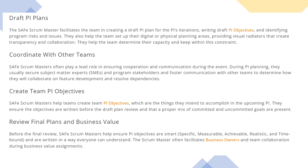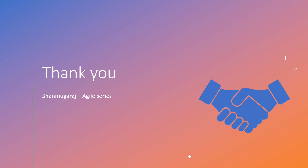Finally, they review the plans and business value. Before the final review, the SAFe Scrum Master helps ensure PI objectives are SMART and written in a way everyone can understand. The Scrum Master often facilitates business owners and team collaboration during the business value assignments. With that, we have come to the conclusion of today's video. Hope you got a nice idea on how the SAFe Scrum Master helps the team in facilitating PI planning, which is one of the primary responsibilities of the SAFe Scrum Master.